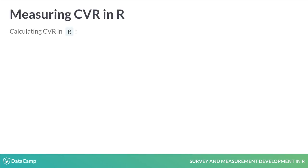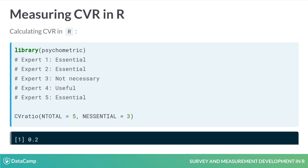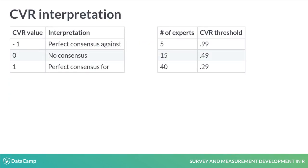The psychometric package includes the CVRatio function to help calculate this statistic. CVRatio takes two arguments: N total for the number of experts, and N essential for those rating the item essential. Let's say we asked five experts about the strength of an item — three of them assessed it as essential. Passing those numbers to CVRatio, we have a CVR of 0.2. CVR values range from minus one to one, indicating perfect consensus for and against the absolute need for the item respectively. The threshold for whether to keep or drop an item due to its CVR depends on the number of experts in the panel.